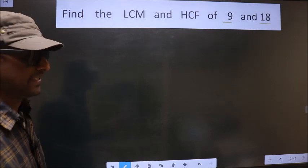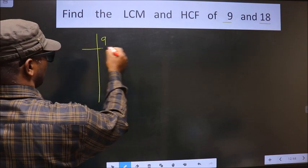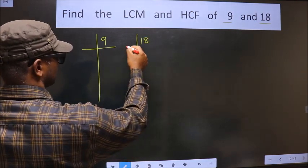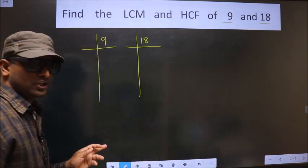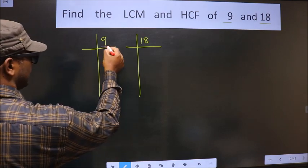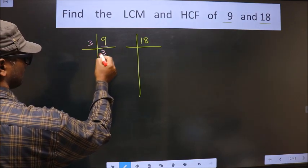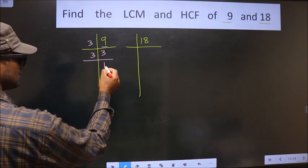That is, 9 and 18. Here we have 9. 9 is 3 times 3. Now 3 is a prime number, so we take 3, and 1 times 3 equals 3.